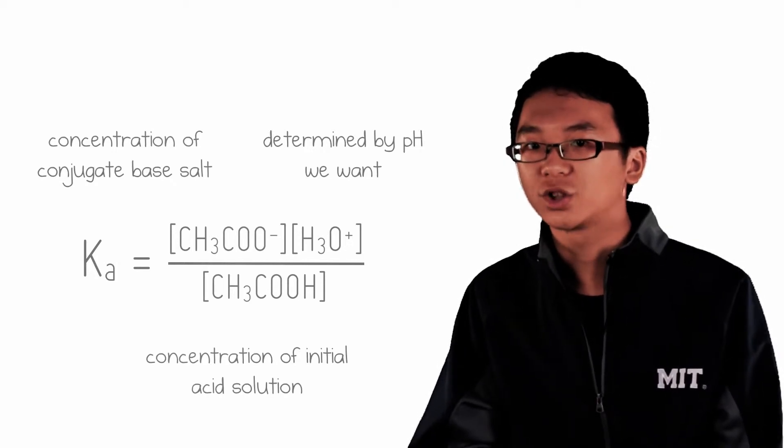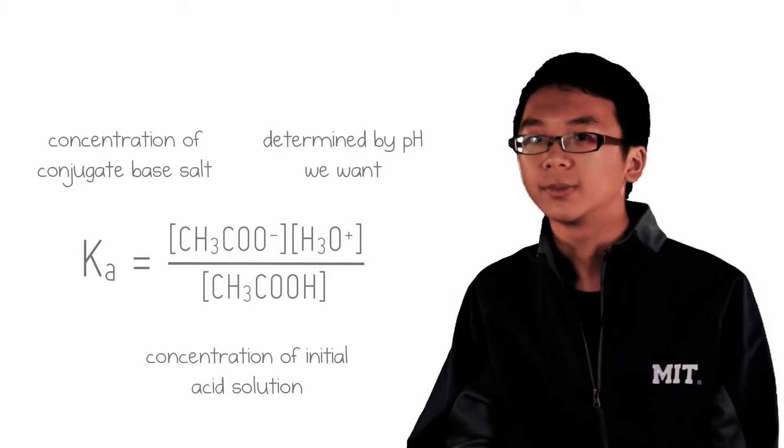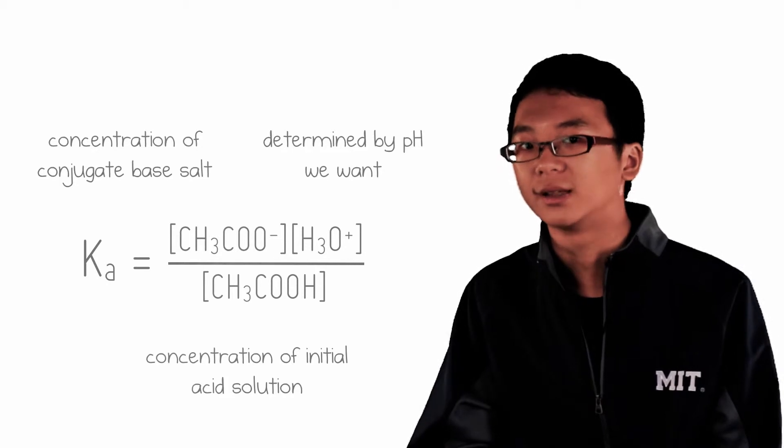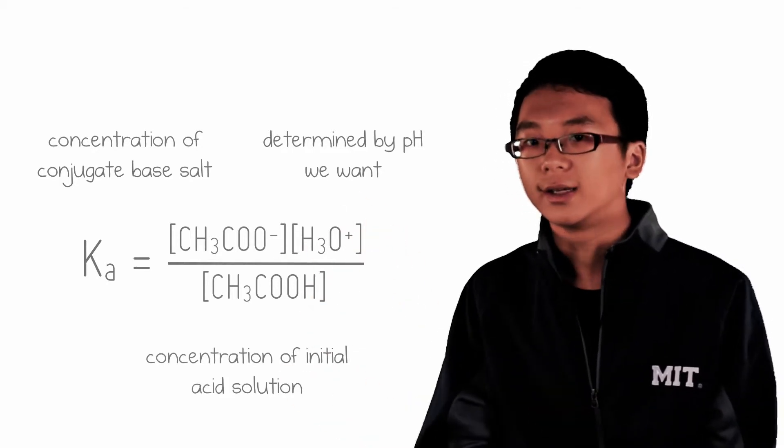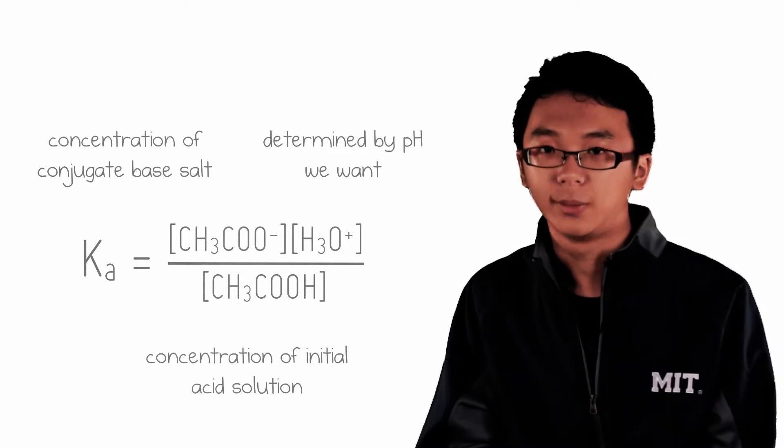And the extent of dissociation will only be reduced when we add ethanoate to the solution from sodium ethanoate. In short, we assume that the concentration of ethanoate ions contributed by the dissociation of the weak ethanoic acid is negligible. The concentration is pretty much all contributed by sodium ethanoate.